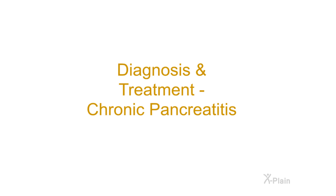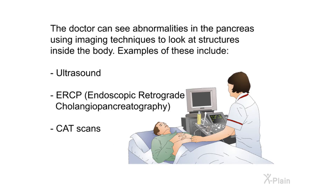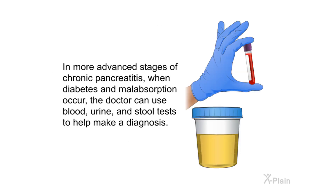Diagnosis of chronic pancreatitis is difficult, but several advanced medical techniques are available. Pancreatic function blood tests help the doctor decide if the pancreas can still make enough digestive enzymes. The doctor can also see abnormalities using imaging techniques such as ultrasound, ERCP (endoscopic retrograde cholangiopancreatography), and CT scans. In more advanced stages, when diabetes and malabsorption occur, the doctor can use blood, urine, and stool tests to help make a diagnosis.